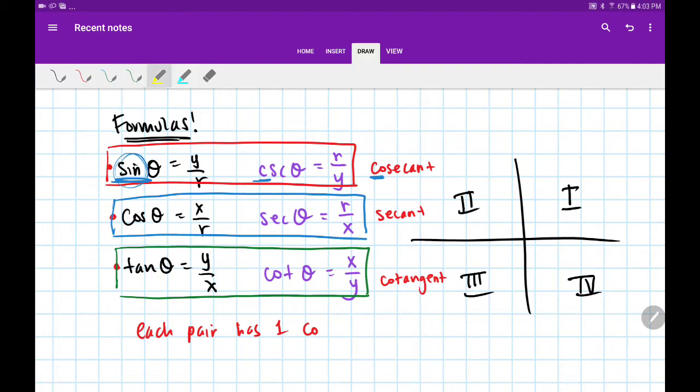In the second pair, I have cosine, which already starts with co. Therefore, its partner is just secant, not cosecant, because you can only have one co in a pair.